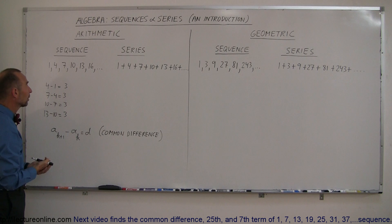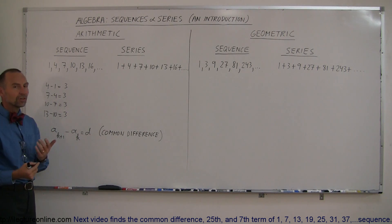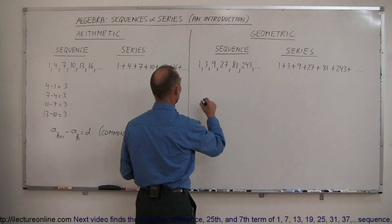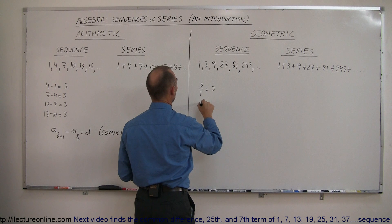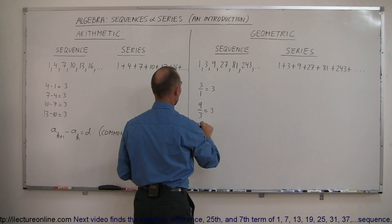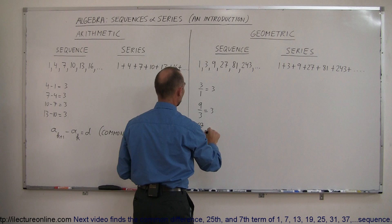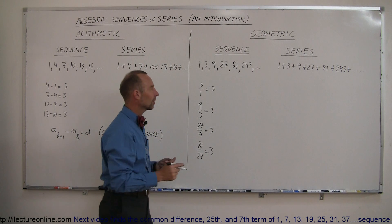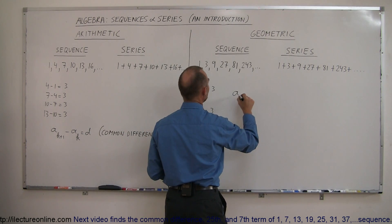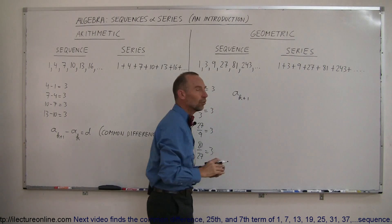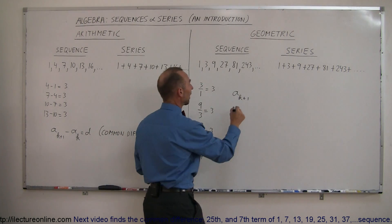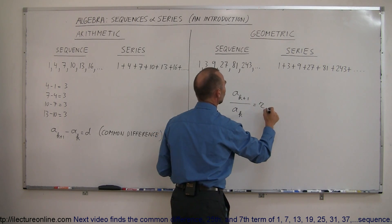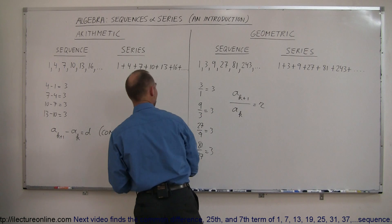For a geometric series it's a little bit different. If we take any number and divide it by the previous number — for example, 3 divided by 1 equals 3, 9 divided by 3 equals 3, 27 divided by 9 equals 3, 81 divided by 27 equals 3 — you can see the pattern. We say that if we take a sub (k+1) and divide it by the previous element a sub k, that will always equal a ratio r.